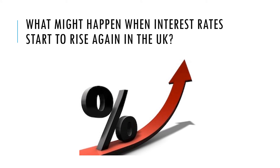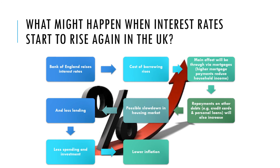What might happen if interest rates were to rise? If the Bank of England raises interest rates, the cost of borrowing rises. The main effect is likely to be through mortgages — loans taken out to buy houses. Higher mortgage repayments reduce household income, leaving less spare money. There will also be higher repayments on other forms of debt like credit cards or personal loans, and a slowdown in rising house prices. Overall, there will be less lending, less spending, less investment, and lower price rises.